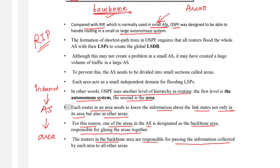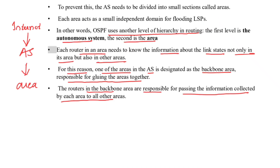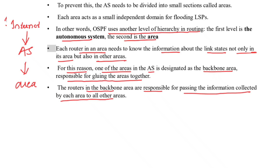This way, a router in one area can receive all link state packets generated in other areas. Each area has an area identification number, and the backbone area's ID is zero. In this session, I have shown how OSPF forwarding tables are constructed and how OSPF functions overall. Please like, share, and subscribe to the channel.